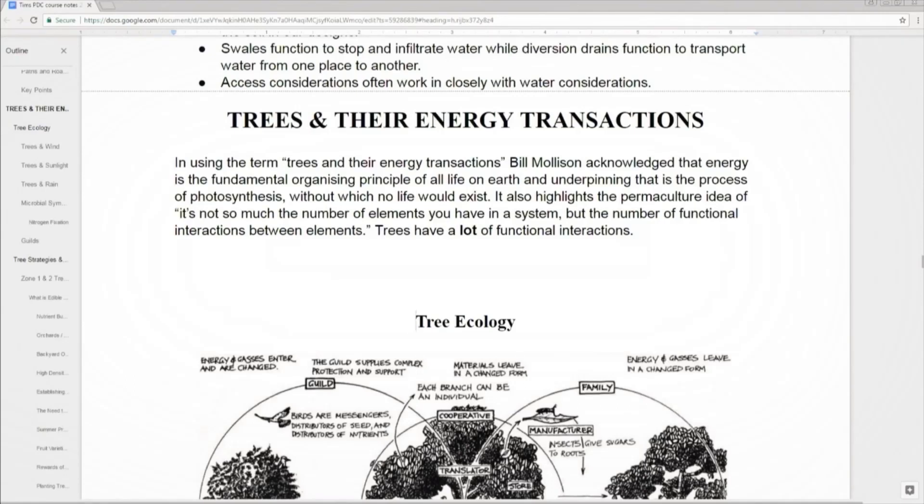Photosynthesis is sort of the fundamental energy harvesting process for life on earth and trees. Trees are the plants that have figured out how to get dibs on the incoming sunlight. Other plants often end up living in the shade if they're in an area that has trees.